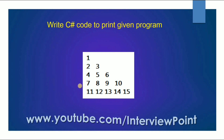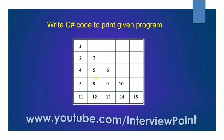First we need to understand the program. In the first row I want to print only the number one. In the second row I want to print two and three. In the third row I want to print four, five, six, and so on. In the first column I want to print one, two, four, seven, eleven — like that. These numbers are in a series: one, two, three, four, five, six.